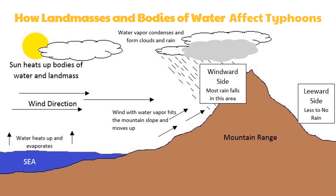In a very general sense, typhoons gain power as they move over warm bodies of water and start losing energy once they are over cold water. There are other factors in play, such as the temperature of water and air, moisture, air currents, and the temperature of the landmass, but that is just the general rule.